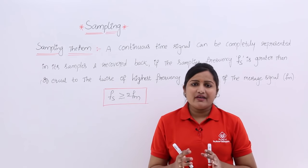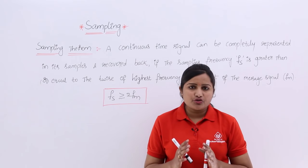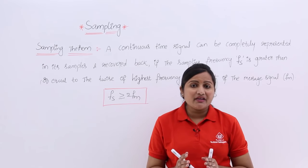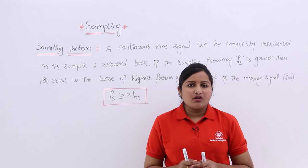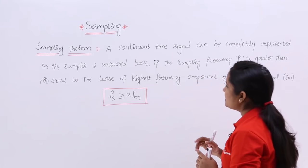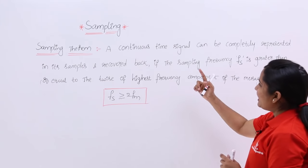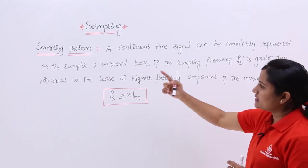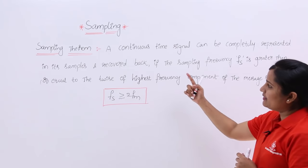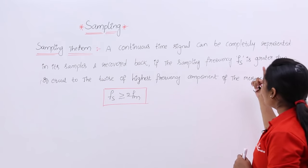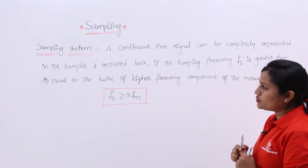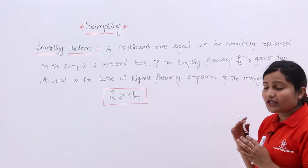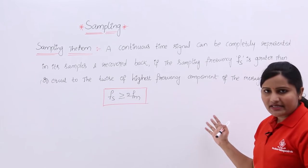That condition is: fs must be greater than or equal to 2fm — that means the sampling frequency must be greater than or equal to twice the maximum frequency component of the message signal. A continuous time signal can be completely represented into its samples and recovered back if the sampling frequency fs is greater than or equal to twice the highest frequency component of the message signal.